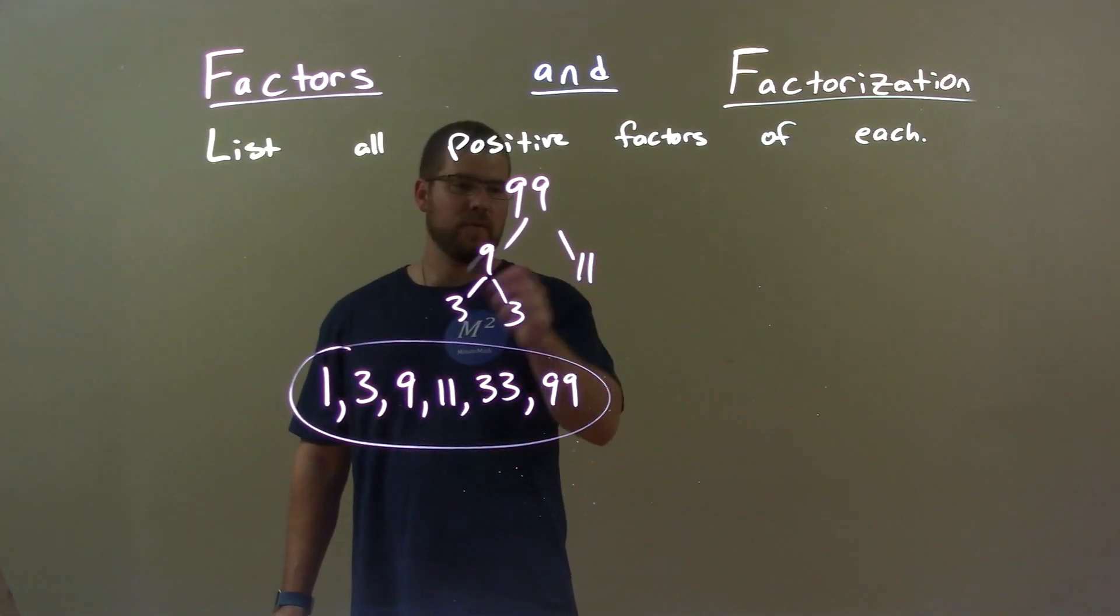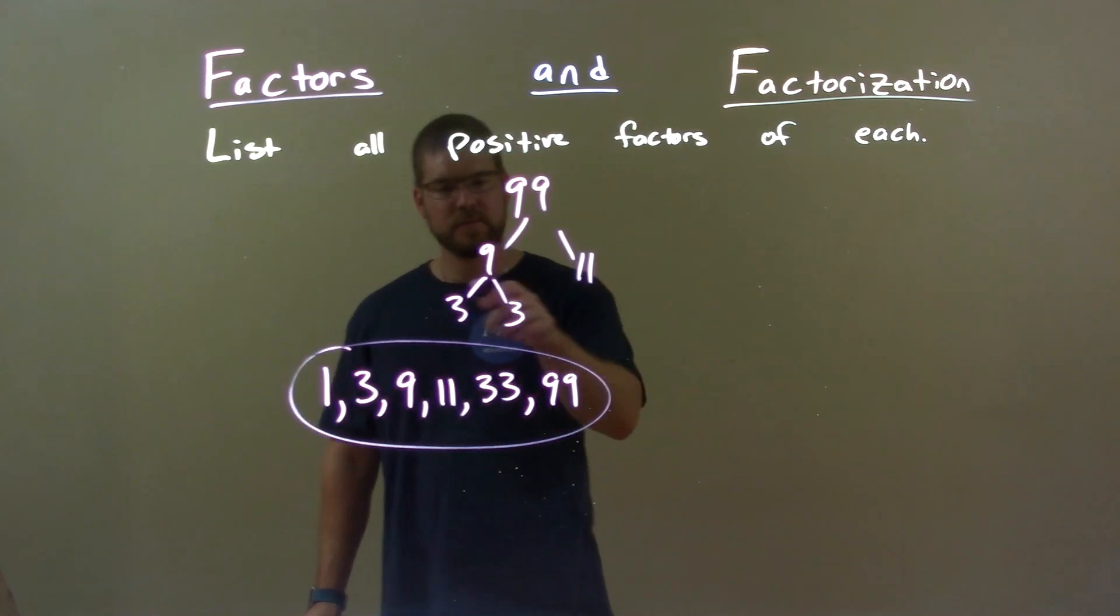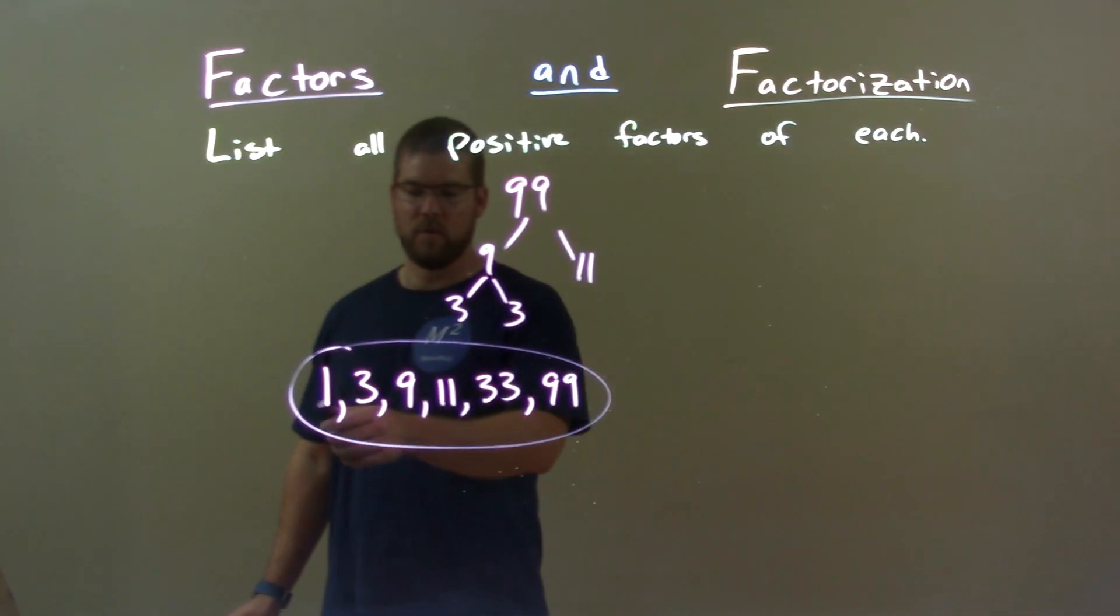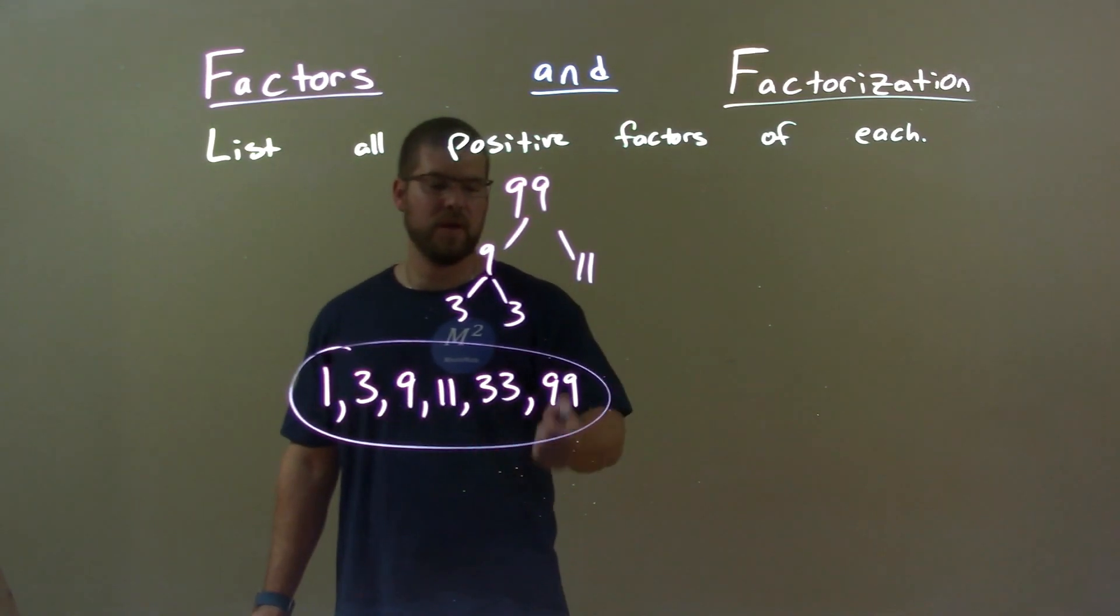Well, that by doing those, it gave me all the possible options for the prime numbers. And it gave us our final answer of 1, 3, 9, 11, 33, and 99.